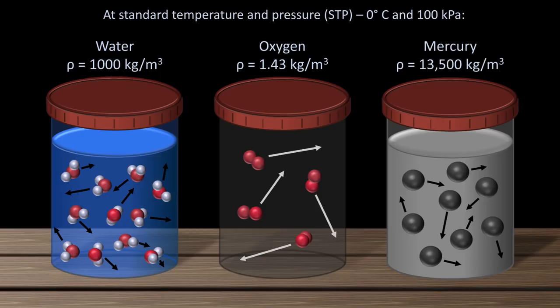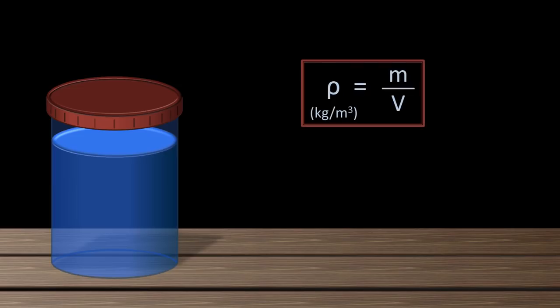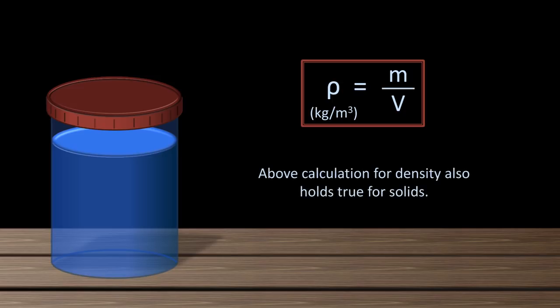The density of mercury is largely a consequence of its atomic mass of 200. The explanation as to why something as dense as mercury is a liquid and not a solid requires quantum physics, and thus I won't get into it here. So how does one calculate density? The equation is one of the easiest to remember and understand in all of physics. Density, which is usually expressed as kilograms per cubic meter, is equal to the mass of a fluid over its volume. Very intuitive, and this calculation also happens to be true for solids.